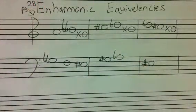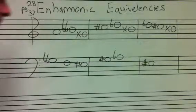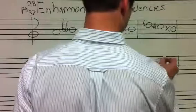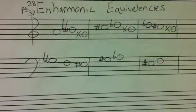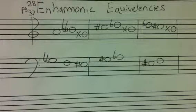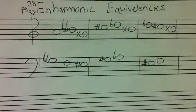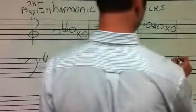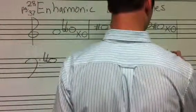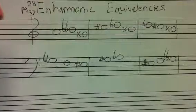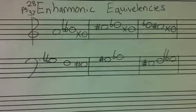E-sharp is the same as F. E-sharp lands on F. What kind of G can I use to land on E-sharp? The answer is G double-flat. This concludes our video.